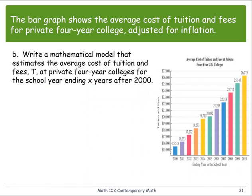Part B: we're going to write a mathematical model that estimates the average cost of tuition and fees. Let T be the tuition and fees at the private four-year college for the school year ending X years after 2000. That means if X is zero, that represents the year 2000.